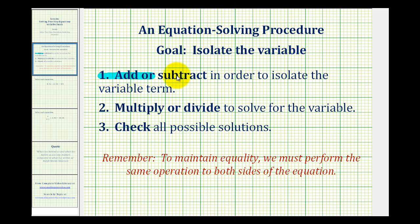To do this, we'll first add or subtract in order to isolate the variable term. And then we're going to multiply or divide in order to solve for the variable. And then we should check our solution. Remember, to maintain equality, we must perform the same operation to both sides of the equation.